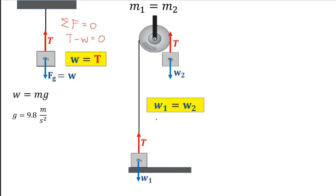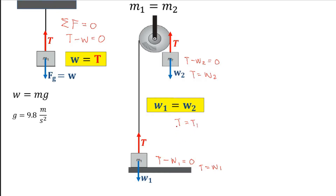For computing this, the summation of forces is more complicated because we have two masses. For mass 1: tension going up minus weight 1 equals 0. For mass 2: tension going up minus W2 equals 0. Since the tensions are equal, we can equate them. Tension equals weight 1, and tension equals weight 2. Since tension is equal on both sides, weight 1 equals weight 2, because they experience the same tension.